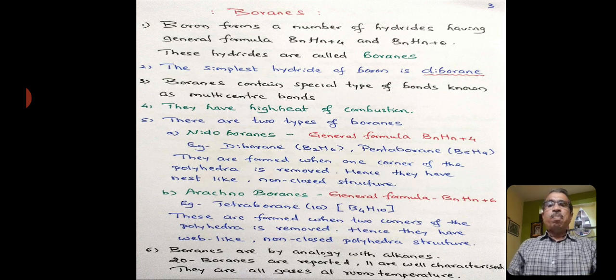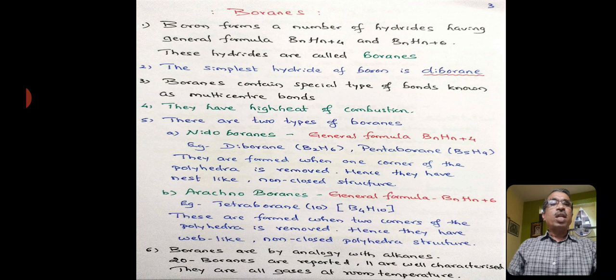Boranes form a number of hydrides having the general formula BnHn plus 4 and BnHn plus 6. These hydrides are called boranes and the simplest hydride of boron is diborane. The simplest hydride of carbon is methane, which contains only one carbon atom. But the simplest hydride of borane should be BH3, but BH3 is not stable. Therefore, it combines with another BH3 and forms diborane.